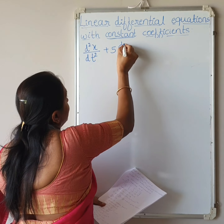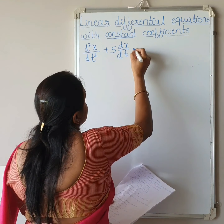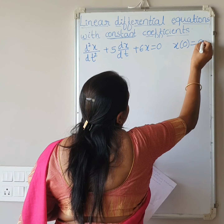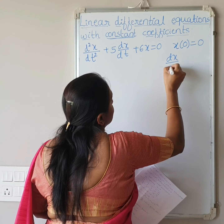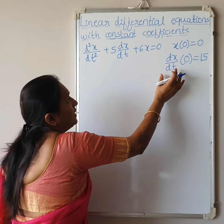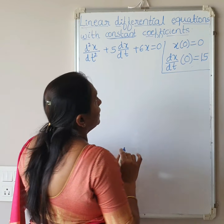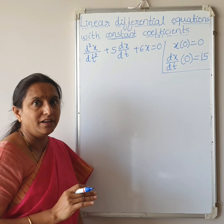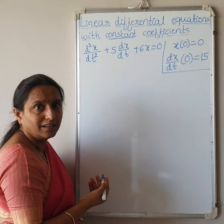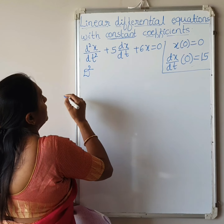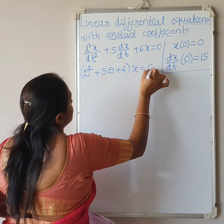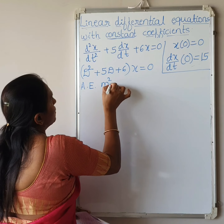Now we take an example where initial conditions are given. Solve d²x/dt² plus 5·dx/dt plus 6x equals 0, given x(0) equals 0 and dx/dt equals 15 when t equals 0. When initial conditions are given, we can find the values of the arbitrary constants.